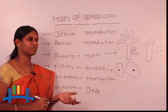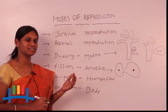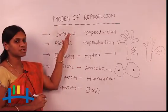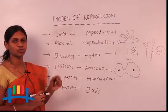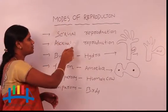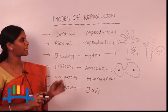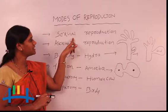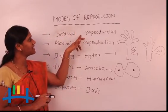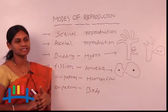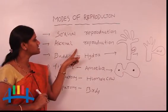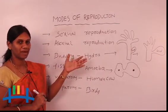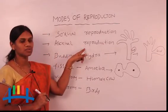New animals, new plants — those are the modes of reproduction types. Reproduction is commonly of two types: one is sexual reproduction and the second is asexual reproduction. What is the difference between the two? Sexual means the gametes are present — male and female gametes are present — that is called sexual reproduction. Asexual reproduction is without gametes; we get new plants or organisms without gametes, and that is called asexual reproduction.